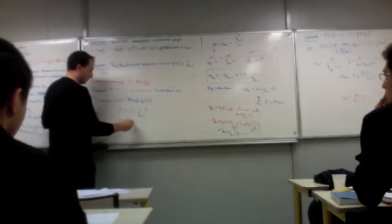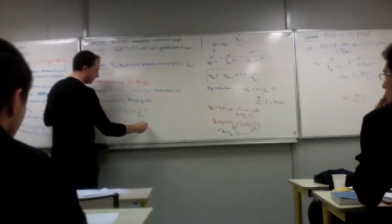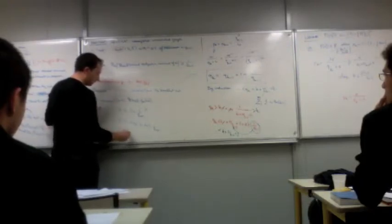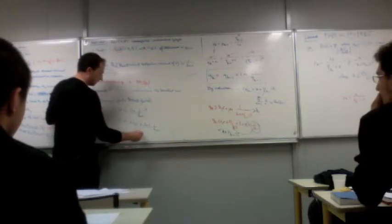Which is 1 minus 1 minus 1 over log n to the K, which is 1 minus exponential of K times log of 1 minus 1 over log n, which is at least 1 minus exponential of minus K over log n.